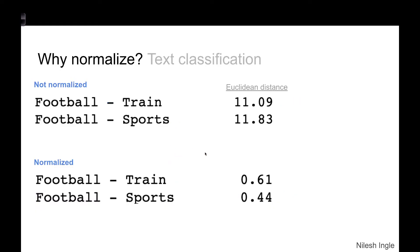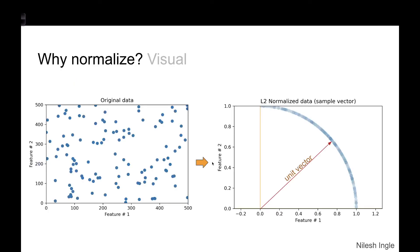Let's look at another way to visualize how normalization works. On the left-hand side we have a set of random data points, and on the right-hand side is the L2-normalized dataset. We can see that all the data points now lie along the circumference of a circle, and each vector has a length of one from the origin. That is how normalized data looks when plotted.